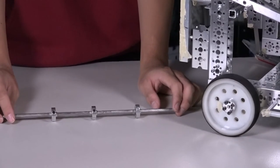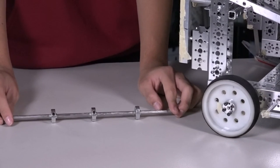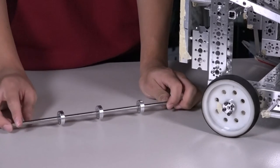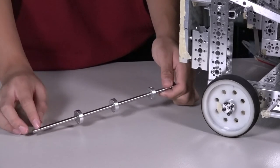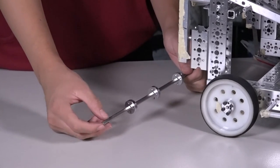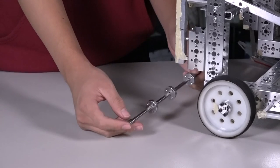So tip number four, we always want to make sure our set screws are attached properly. During the heated competition where there's a lot of low visibility going on, it's kind of hard to see where the flat part of the axle is when you're attaching it to a wheel.